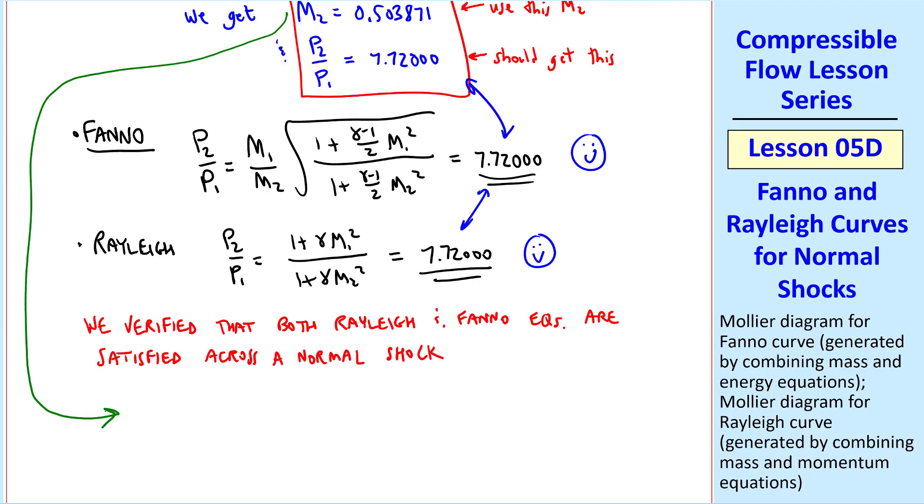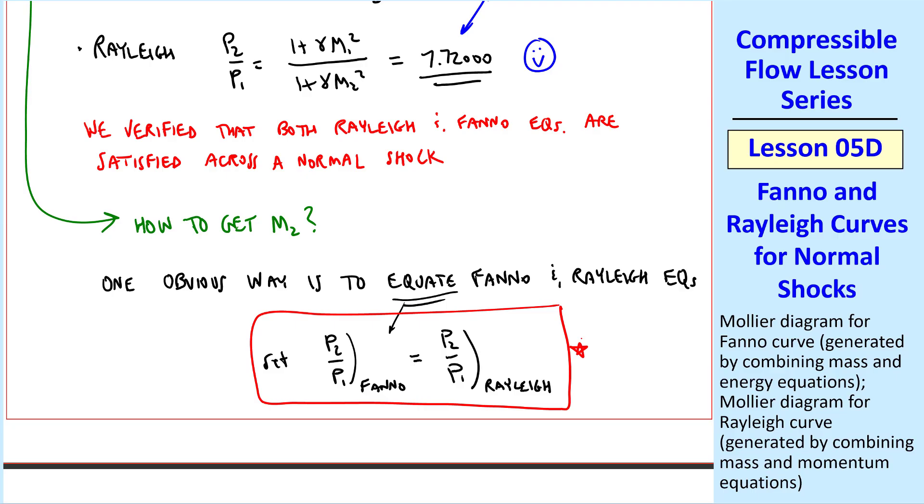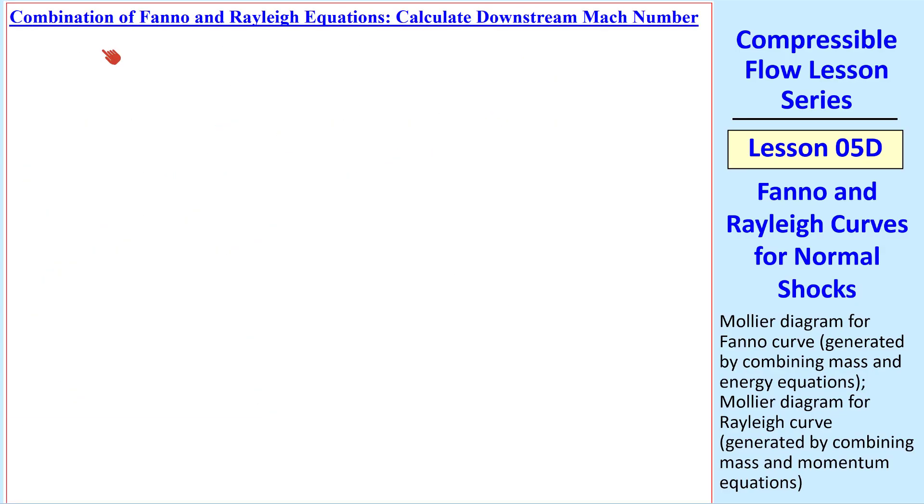But how do we get this M2 without using the online calculator? Well, I'll show you a couple of ways to do this. One obvious way is to equate the Fanno and Rayleigh equations. In other words, set P2 over P1 from the Fanno equation to P2 over P1 from the Rayleigh equation. What this will do is satisfy all three equations, mass, momentum, and energy, since Fanno uses mass and energy, and Rayleigh uses mass and momentum. But by setting these equal to each other, we should be able to generate M2 across the shock. In other words, M2 is a function of M1 and gamma, which is what we ultimately want.